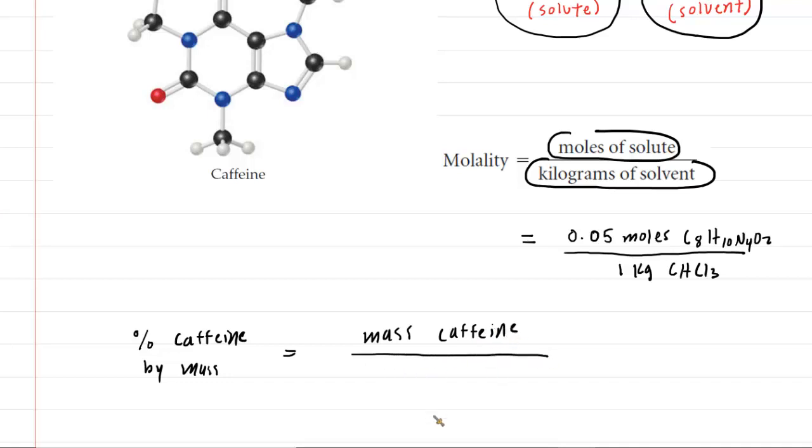divided by the total mass. Now, the total mass would be usefully broken up as follows. It would be the mass of the caffeine plus the mass of the chloroform solvent. Now, remember, for the mass of the chloroform solvent, this value right here, we already know that that's 1 kilogram, a.k.a. 1,000 grams. So that we know. That's all set.